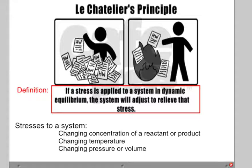There are three stresses we can place on a system: the first is a change in concentration of either the reactants or the products, a change in temperature, or a change in pressure or volume. We're going to talk about each of these stresses one at a time.